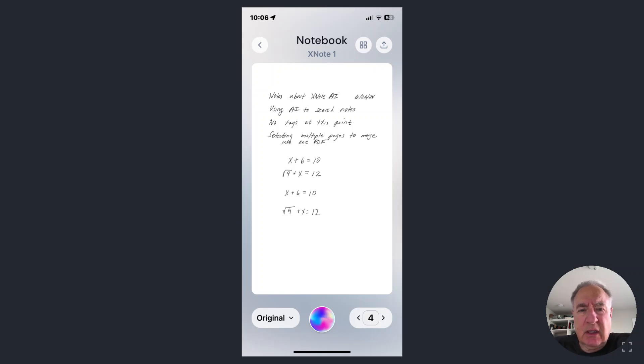XNote is a digital pen technology that takes advantage of AI, so you can do a couple of different things to your notes.